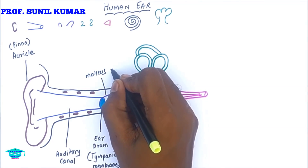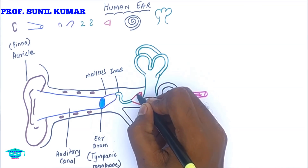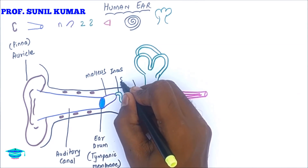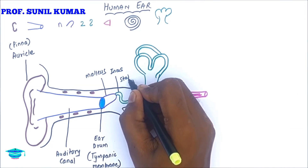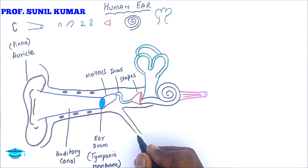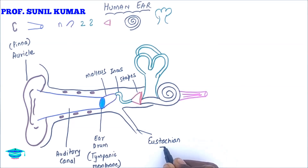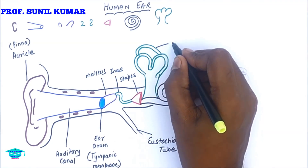The ear drum is also called the tympanic membrane. The three ear ossicles are the smallest bones of our body: malleus, incus, and stapes. The stapes is the smallest one — malleus is known as the hammer, incus as the anvil, and stapes as the stirrup. Then comes the eustachian tube, whose role is to equalize air pressure in both the ears.